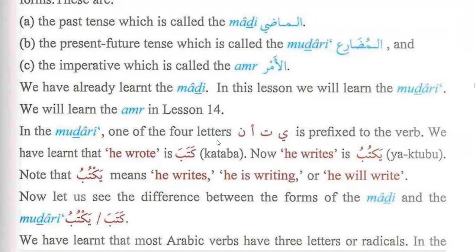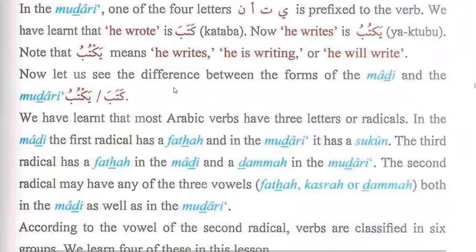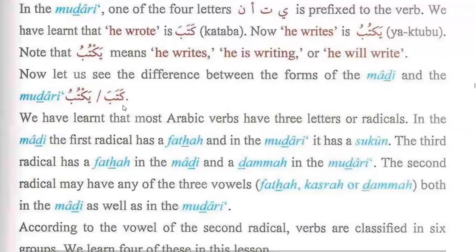In the mudari, one of the four letters ya, ta, alif, or nun is prefixed to the verb. We have learned that 'he wrote' is kataba. Now 'he writes' is yaktubu. Note that yaktubu means 'he writes,' 'he is writing,' or 'he will write.' Now let us see the difference between the form of the madi and the mudari: yaktubu versus kataba.